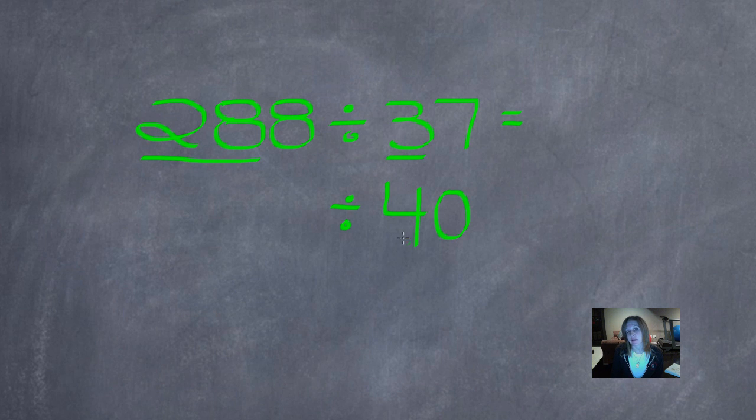And I need a number that is close to 28 that 4 will divide evenly into. And 4 actually divides perfectly into 28 because 4 times 7 is 28. So I'm going to rewrite 28 below that and change that 8 to a 0 because now I'm ready to do mental math to divide.